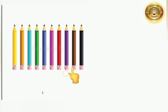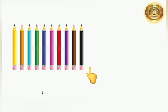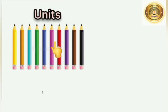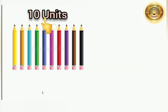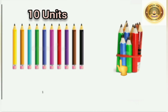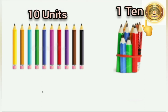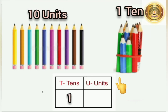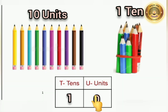Here, we are going to take 10 pencils. Let's count: 1, 2, 3, 4, 5, 6, 7, 8, 9, 10. We have taken 10 pencils. When they were single, it is called units. So here, 10 pencils are there — we call it 10 units. Now, let us make a bunch of them. 10 single units become 1 group of 10. When we make a bunch and keep it on the left side, on the right side we write 0 — that is 0 units.